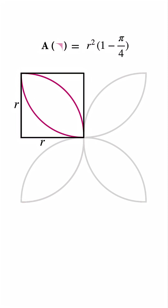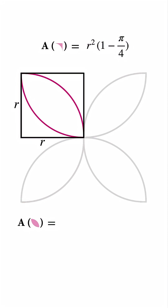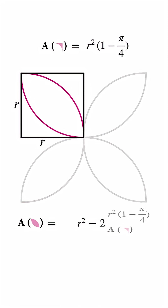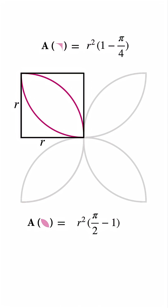Now look at the petal. A single petal is formed by the whole square, minus those two corner sections. So the area of one petal is the square area, minus two times that leftover area. Simplify it, and you will get the final expression for one petal.